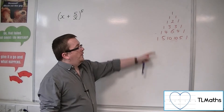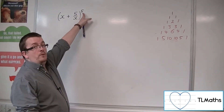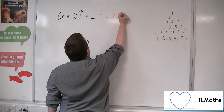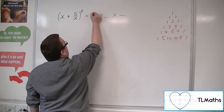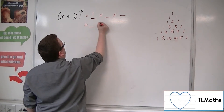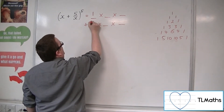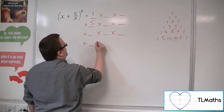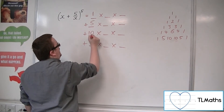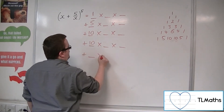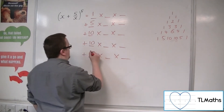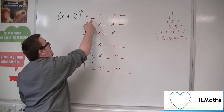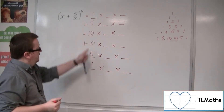That's the row that we want, because we're looking at the power of 5. So we're going to have terms with coefficients 1, 5, 10, 10, 5, 1 down there.